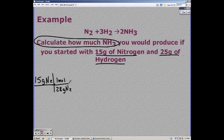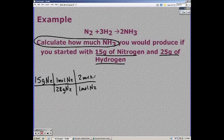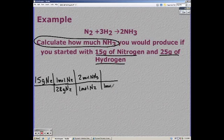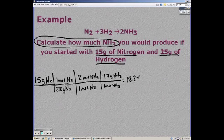First you have to convert your grams of nitrogen to moles of nitrogen. Do your mole to mole ratio of nitrogen to ammonia. And finally moles of ammonia to grams. Multiplying and dividing, that gives us 18.2 grams of ammonia.